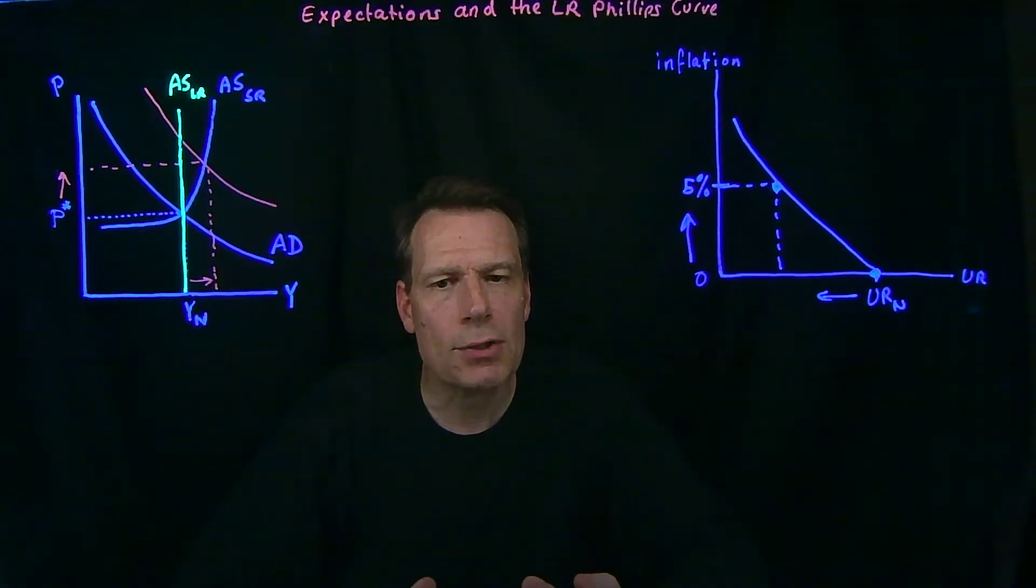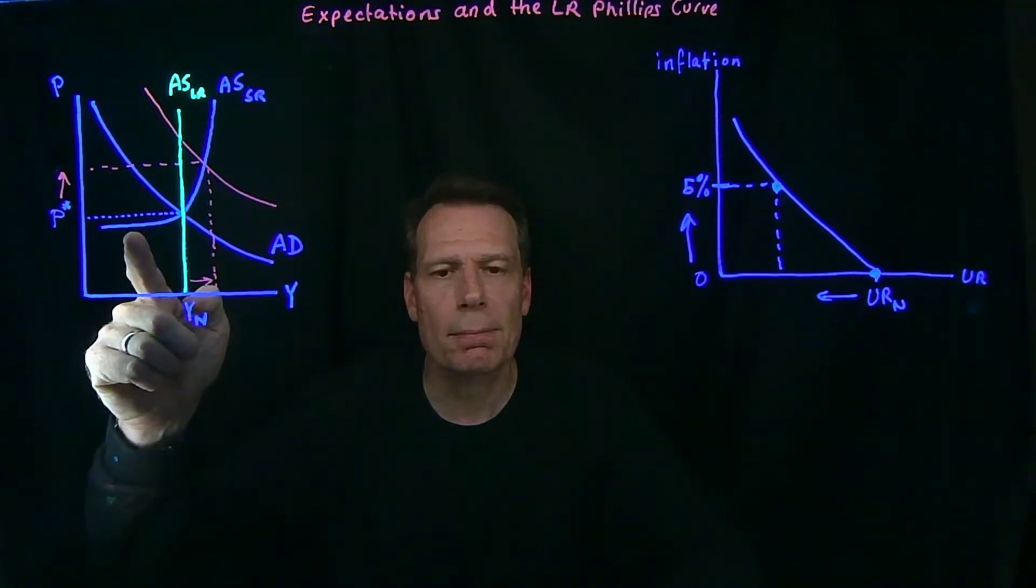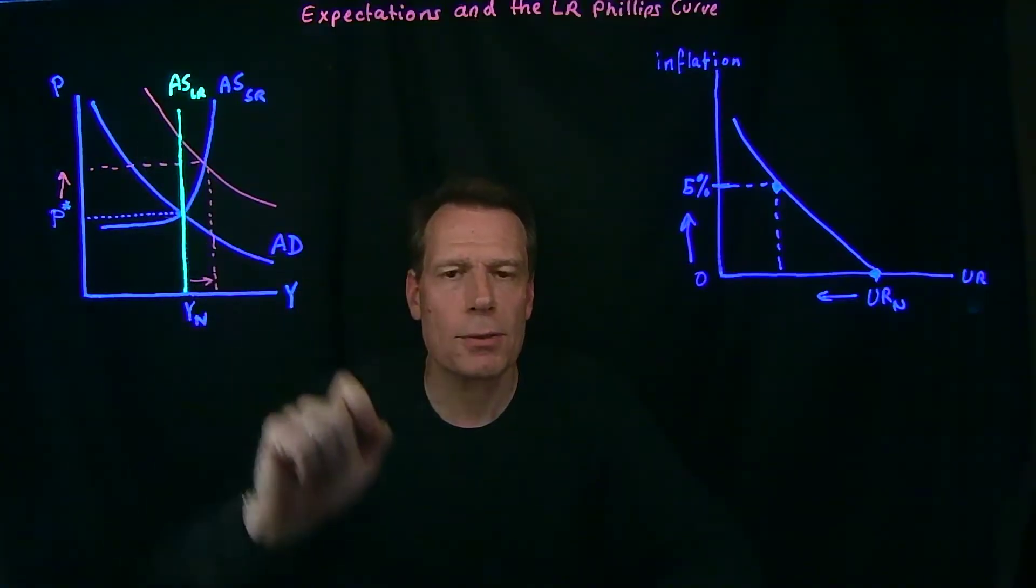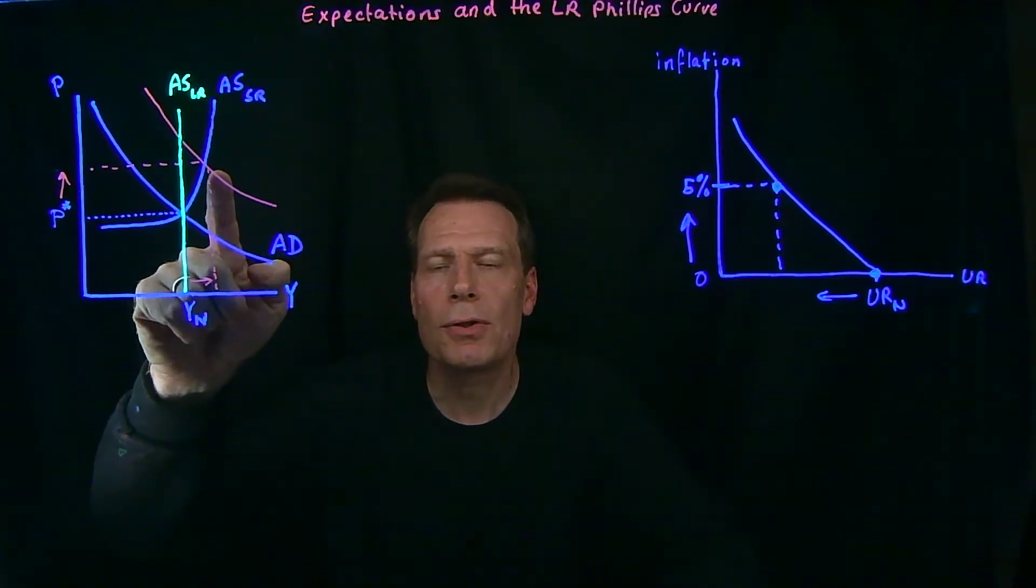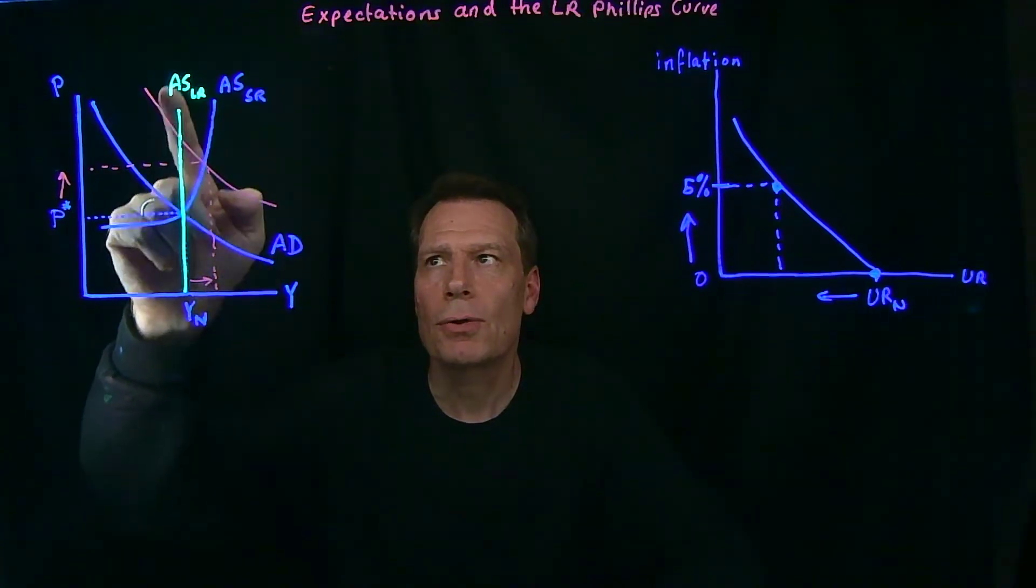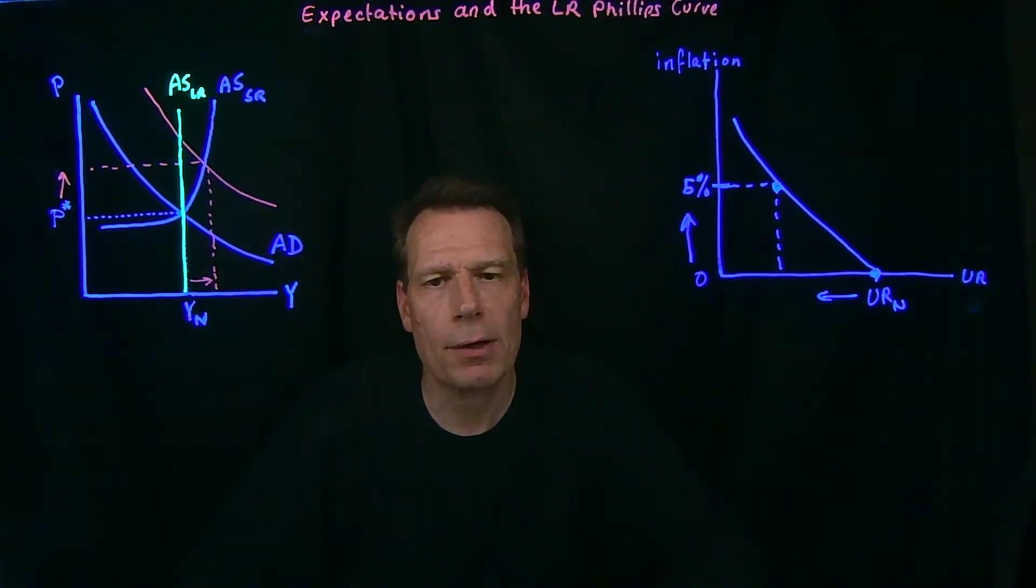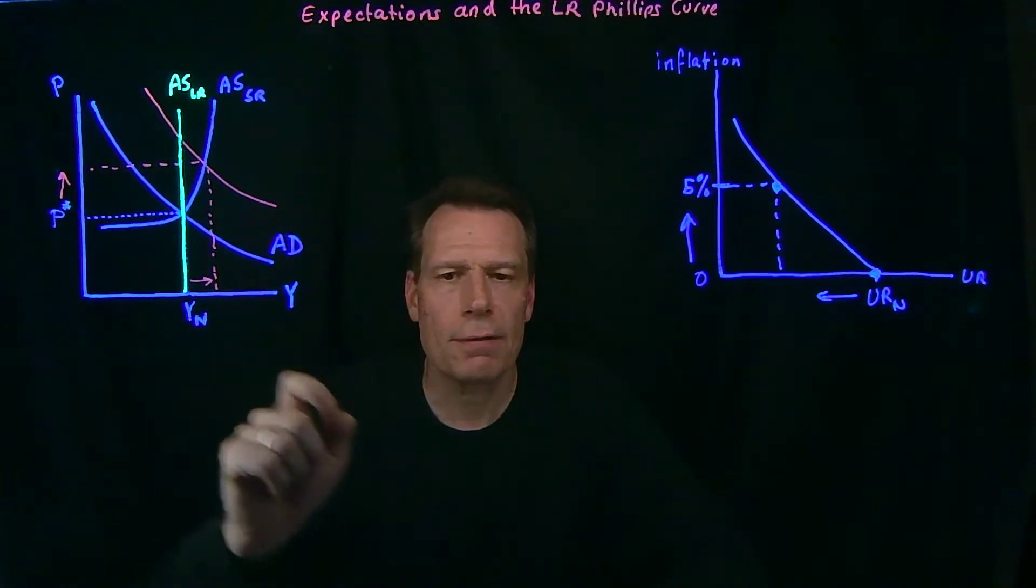Those additional increases caused the short-run aggregate supply curve to shift up and to the left. And as that happens, we move along the new aggregate demand curve towards the long-run aggregate supply curve towards the natural level of GDP.